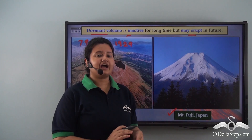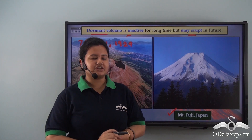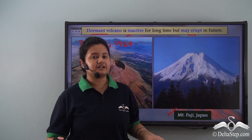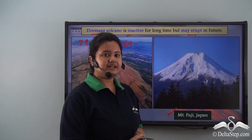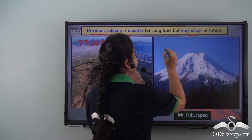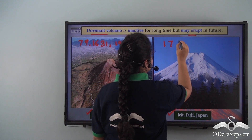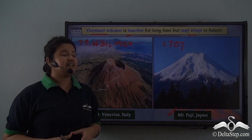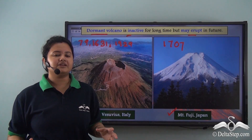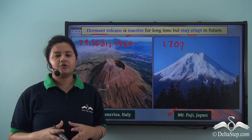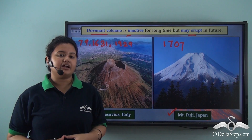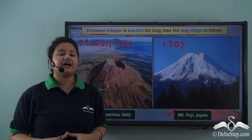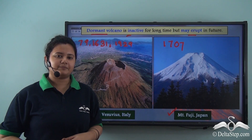Another example is Mount Fuji. Mount Fuji remained inactive for long and suddenly erupted in 1707, and has been dormant since then. Thus a dormant volcano remains inactive for long but retains the possibility of future eruption.